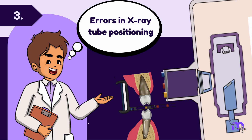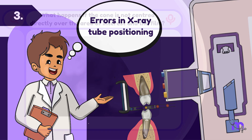For x-ray tube positioning, ensure the cone is centered directly over the area of interest and the film to avoid a cone cut or a partial image.